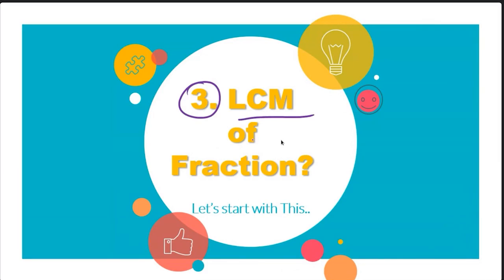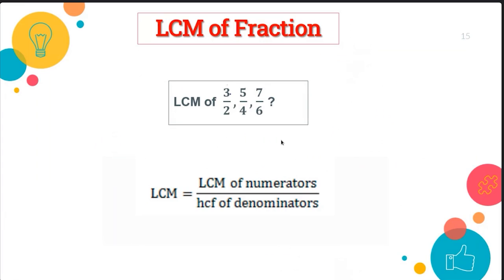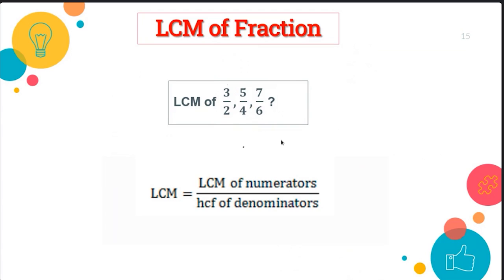The third topic is LCM of fractions. Do you know what a fraction is? Fraction means a number written in P by Q form — like two by three, seven by four. All these numbers are fractions. To find the LCM of fractions, we need to find the LCM of the numerators and the HCF of the denominators. In the numerator we find LCM, and in the denominator we find HCF. So: LCM of fractions equals LCM of numerators divided by HCF of denominators.